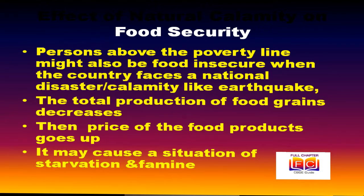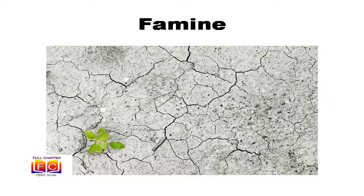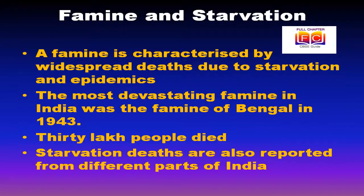The price of food products goes up due to this shortage. At high prices, some people cannot afford to buy food. If such a calamity happens in a very wide area or is stretched over a longer time period, it may cause a situation of starvation. Massive starvation might take the turn of a famine. Thus, a natural calamity affects food security adversely.